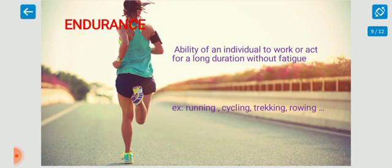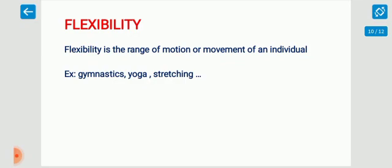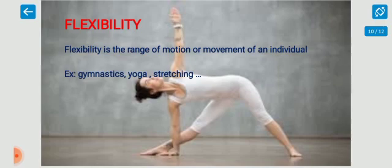While doing endurance activities, the individual's heart, lungs and muscles work together for a long time. The heart helps the body to pump sufficient blood to the muscles, the lungs work to re-oxygenate the blood, and muscles continually produce energy and keep the body moving. Next, flexibility. Flexibility is the range of motion or movement of an individual. This kind of exercise promotes better relaxation and comfort and also provides faster recovery to your body. Flexibility exercises also act as a pain reliever. We can easily prevent joint pains and muscle pains by performing flexibility exercises. For example, stretching exercises, mobility exercises, yoga, etc.